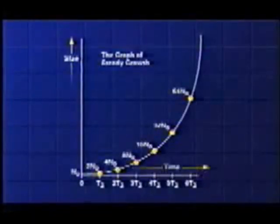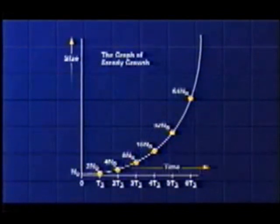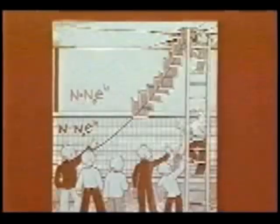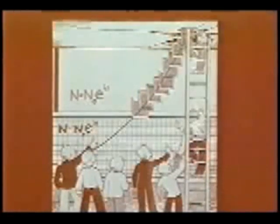Let's look at a generic graph of something that's growing steadily. After one doubling time the growing quantity is up to twice its initial size, after two doubling times it's up to four times its initial size, then it goes to 8, 16, 32, 64, 128, 256, 512 — in just ten doubling times it's a thousand times larger than when it started. If you tried to make a graph of that on ordinary graph paper, the graph will go right through the ceiling.